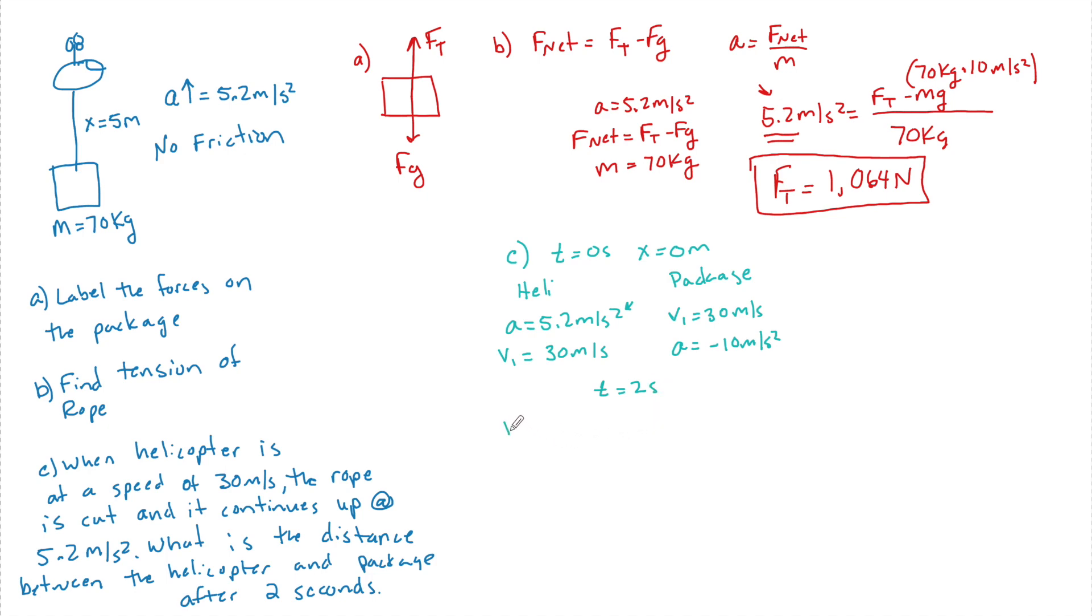So now I look at some t equal to 2 seconds later. I can plug in x equals v naught t plus 1 half a t squared to find out what its position is going to be at 2 seconds.